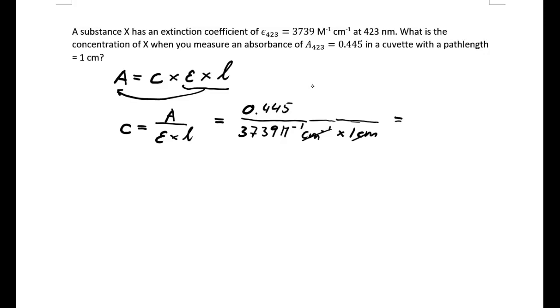All I need to do is plug in these numbers: 0.445 divided by 3739. That gives me 1.19 times 10 to the minus 4.